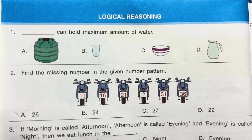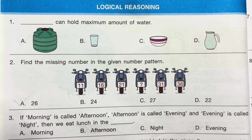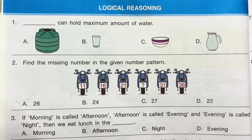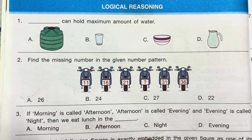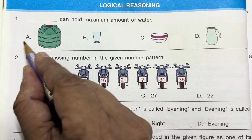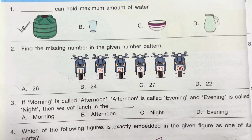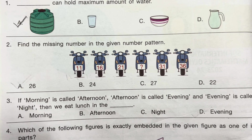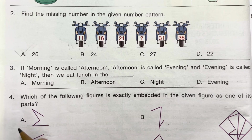First, logical reasoning part. Question 1: which container can hold the maximum amount of water? Answer is A — this tank can hold the maximum amount of water.